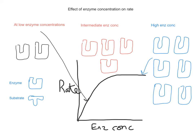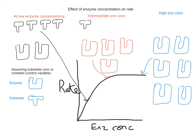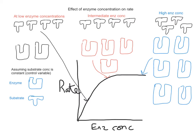We're assuming that the substrate concentration is constant — that's one of our control variables. I'm going to represent it as four substrate molecules. At the low enzyme concentration, although we've got four substrate molecules, only two of them are going to be able to fit into the active site of the enzyme, leaving two substrate molecules which can't bind the enzyme at that moment.